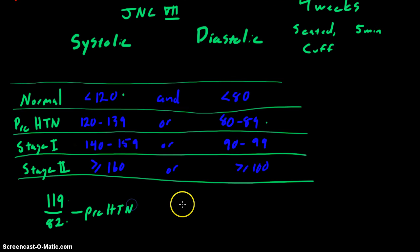Fred's mom — exact same scenario. She has repeated blood pressures of 142 over 87. So 142 is in the stage 1 range. 87 is in the prehypertension range for diastolic. So we give her the worst — we say unfortunately she has stage 1 hypertension.